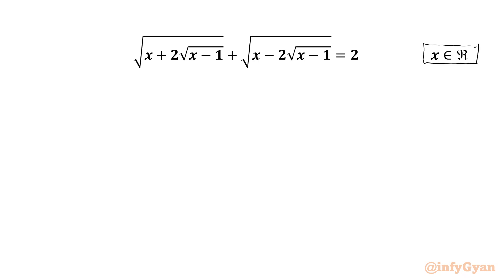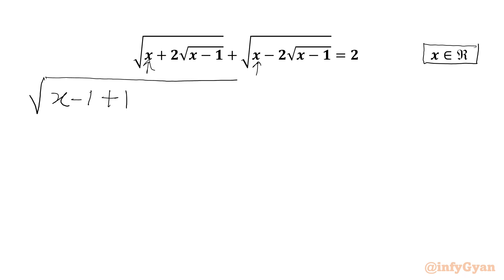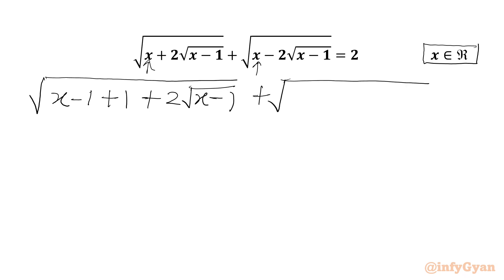Let's get started by writing our equation: square root of x. I am going to use algebraic manipulation and write x equal to (x minus 1) plus 1. Then we have 2 times square root of (x minus 1), plus square root of x written as (x minus 1) plus 1, then minus 2 times square root of (x minus 1). The RHS is 2.